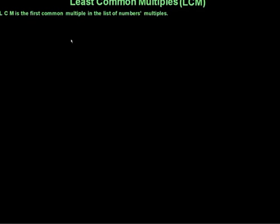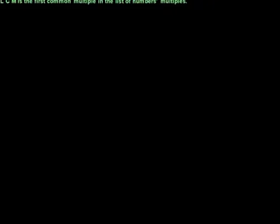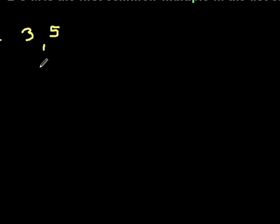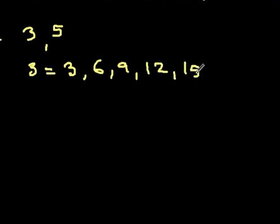So let's try finding least common multiple of 3 and 5. I will write down multiples of 3 first. Multiples of 3 are 3, 6, 9, 12, 15, 18, 21, 24, 27, and then next one is 30. I will stop here.